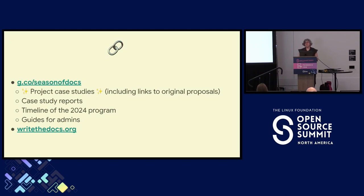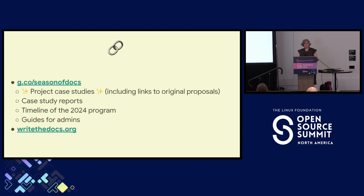The incentives for participation in open source are different for technical writers than for software developers. Developers may have gotten jobs based on open source contributions, and they sometimes code just because it's fun. When technical writers write for fun, they often write fiction, poetry, or plays — they might not necessarily write how-to guides just for fun. So the incentives, both the financial paycheck and the psychic paycheck, for participating in open source can be very different for technical writers.